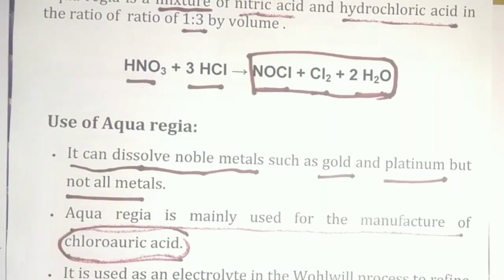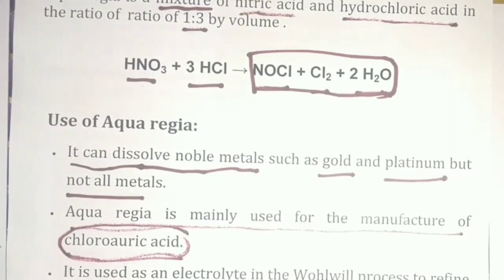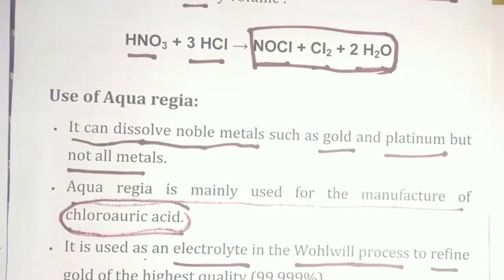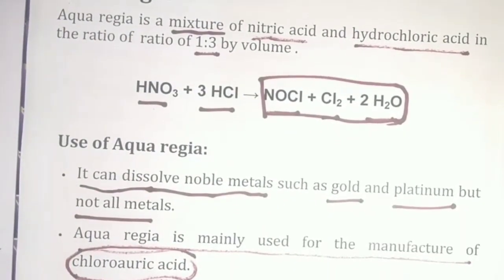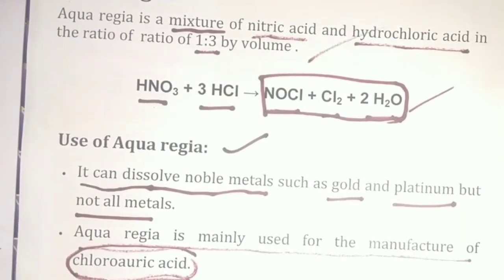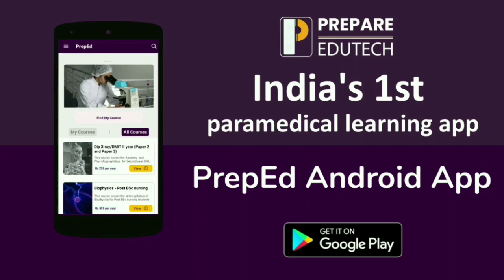Next are analytical procedures. Aqua Regia is used in analytical procedures for dissolving certain compounds. These include phosphate rocks, nickel, chromium, and alloys — compounds like iron ore, nickel, chromium, alloys, and phosphate rocks. This is the solution used in analytical procedures.